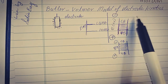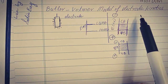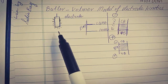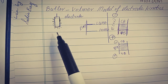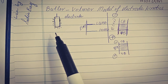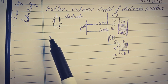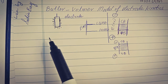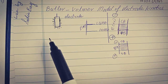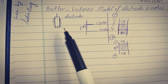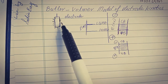Butler-Volmer model of electrode kinetics. Experiments demonstrate that the potential of an electrode is an important effect that affects the kinetics of reactions occurring on its surface.